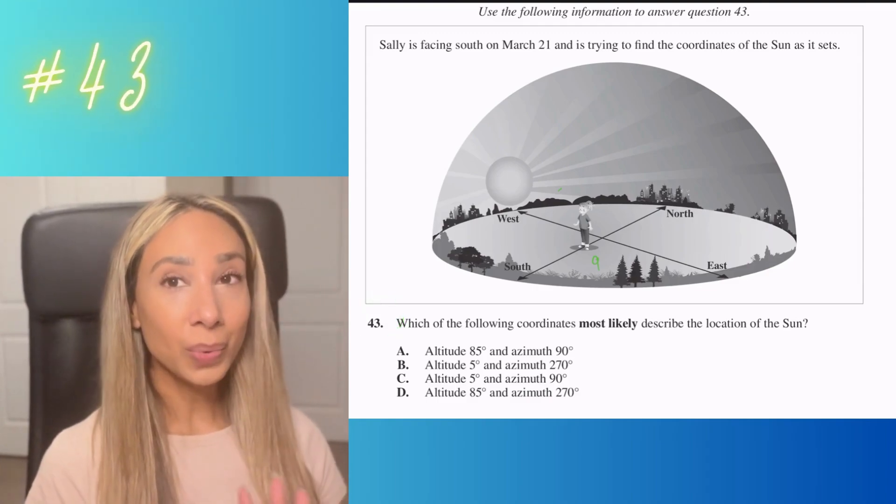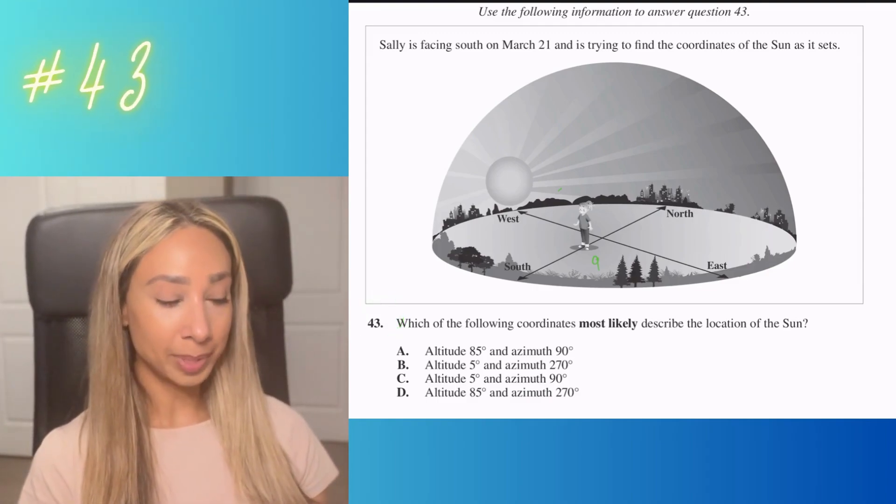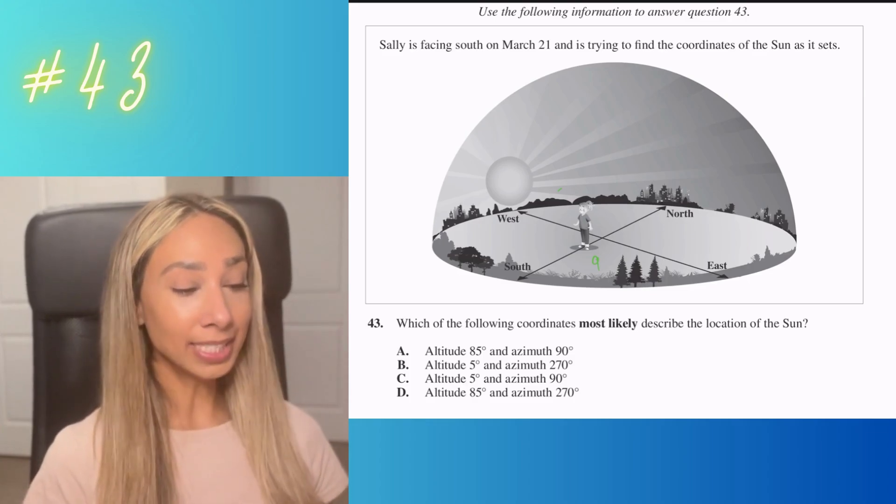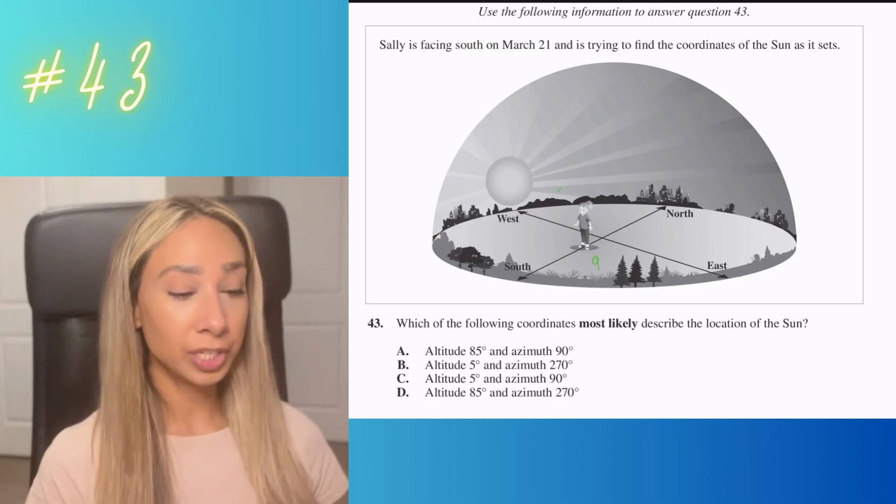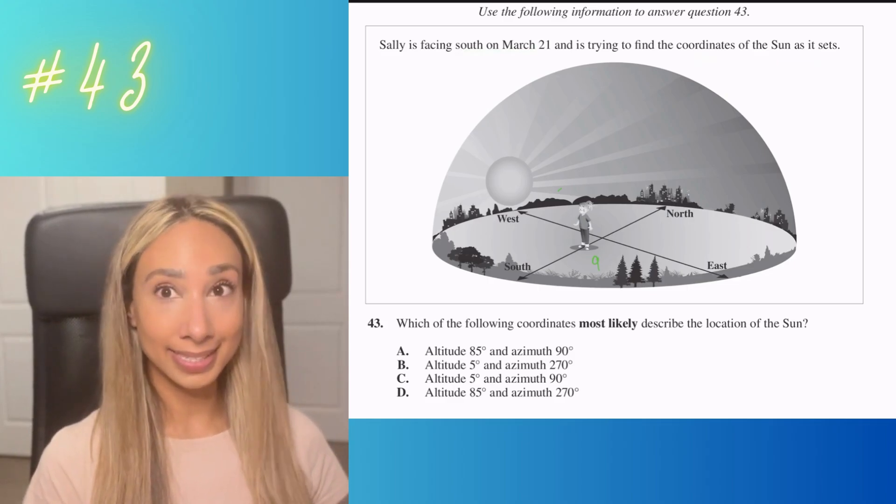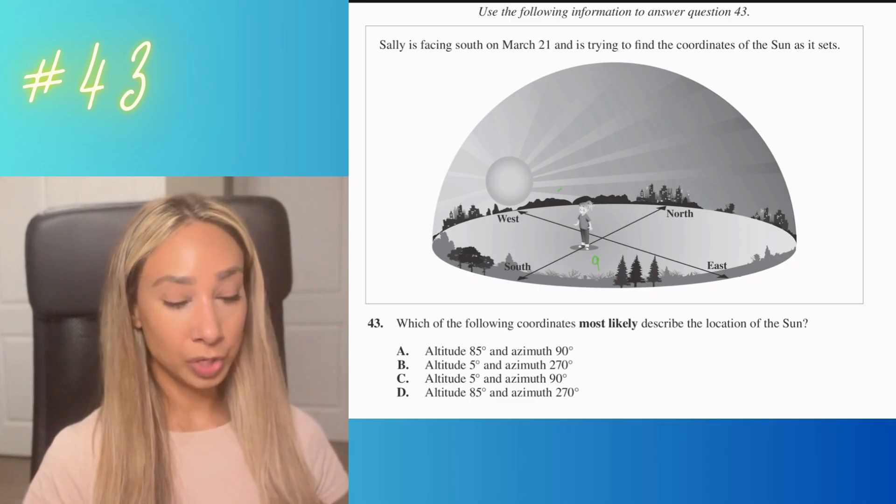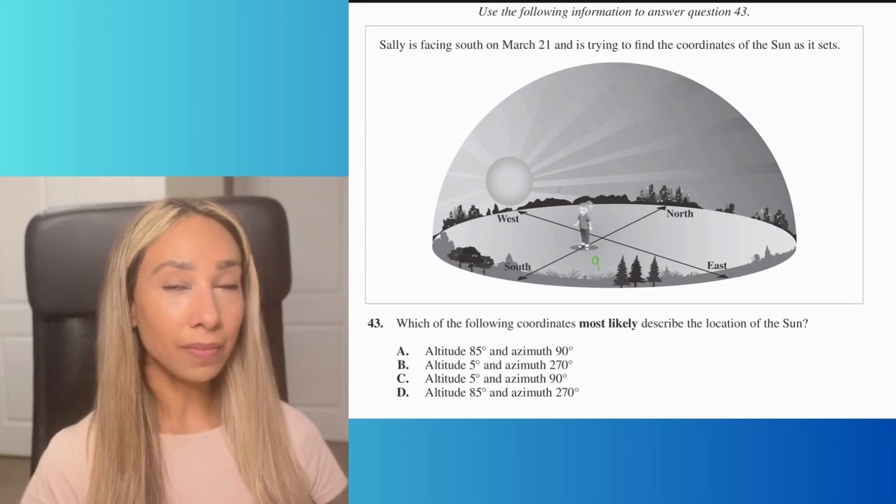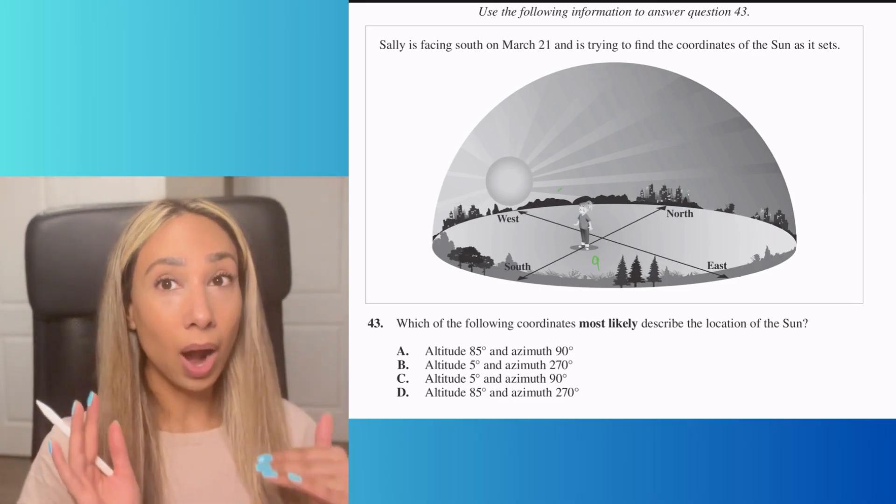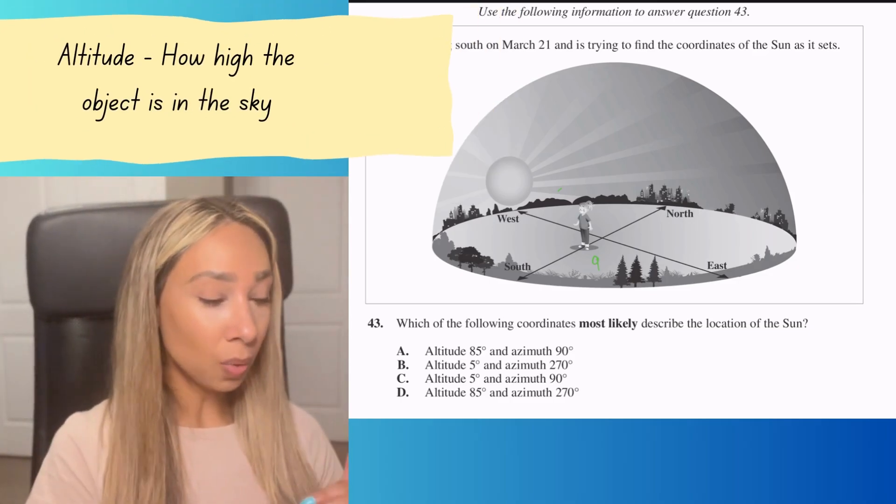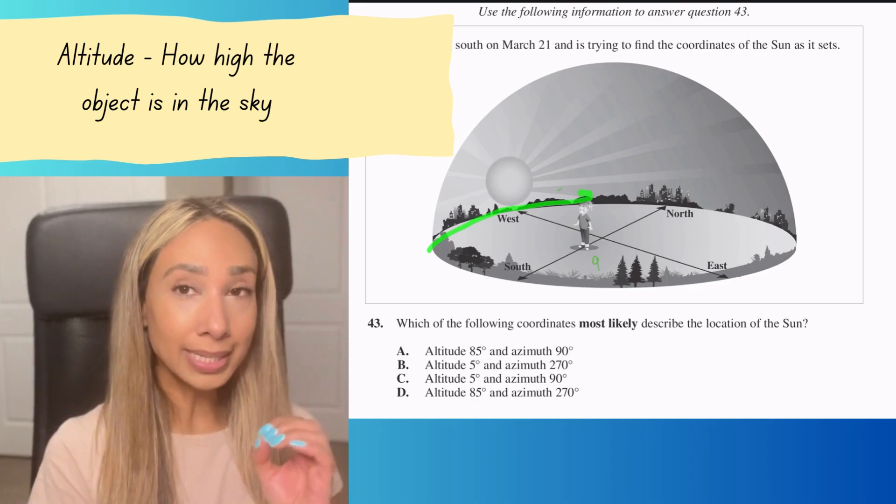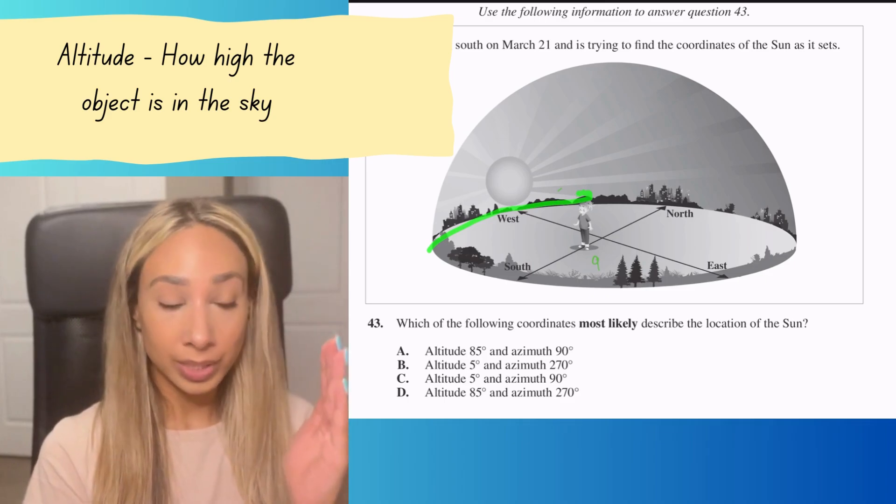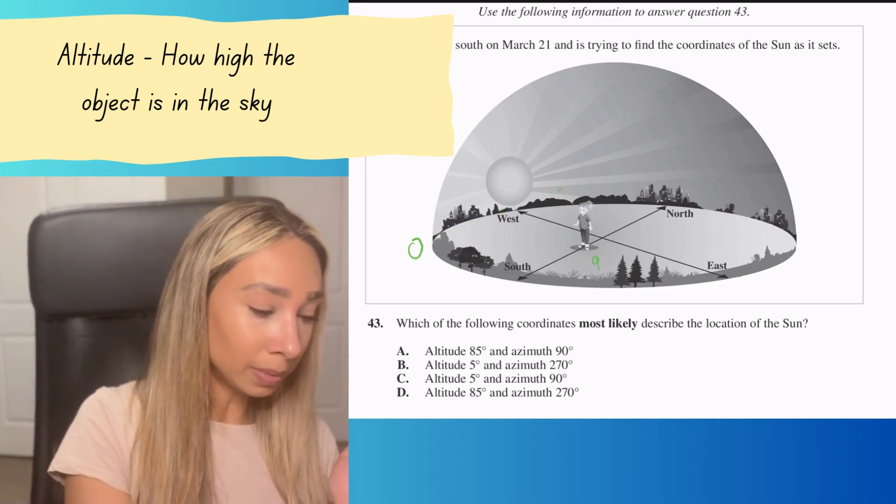Number 43. This one can be tricky because the two are similar yet different. Sally is facing south on March 21st, trying to find the coordinates of the Sun as it sets. When we're thinking of altitude, we're thinking of how high something is in the sky. Our horizon is zero degrees, and we keep going up to get our degrees of altitude.